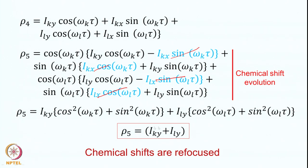All the time and frequency dependencies have completely vanished. We started with ρ₁ = IKZ + ILZ, and after the 90x pulse had −IKy + ILy, and we got back IKy + ILy at time point 5. The chemical shift evolution has been completely refocused — except for the change in sign, which depends on the phase of the 180° pulse. The chemical shift information is completely refocused and we got back the basic operators as we had in the beginning.